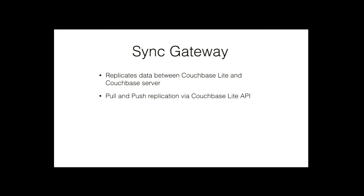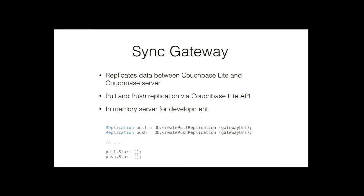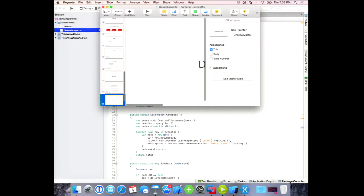The API is really easy to use. They have push and pull replication; they give back replication objects. You set a few properties and then start your replication to a URI where the Sync Gateway is running. You can do this in production or just in development — they make it convenient for developers. The .NET flavor is distributed through NuGet, works inside Xamarin Studio.